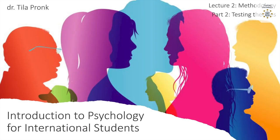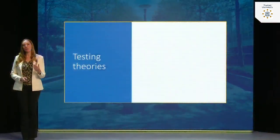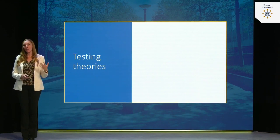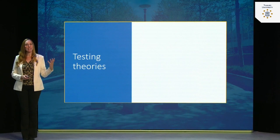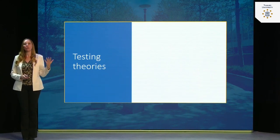This is part two of lecture two. In this part of the lecture, we're going to be talking about how social psychologists test their theories, because that is in the end what we do — we come up with a research question and we want to test a certain theory that we have.